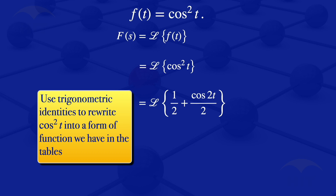So we would have the Laplace transform of one half plus cosine of 2t divided by 2. Using properties of Laplace transforms, we can rewrite that as one half multiplied by the Laplace transform of t to the power 0, plus one half multiplied by the Laplace transform of cosine of 2t. What I did there is I factored out the half, leaving a 1, and 1 is written as t to the power 0, since t to the power 0 equals 1.